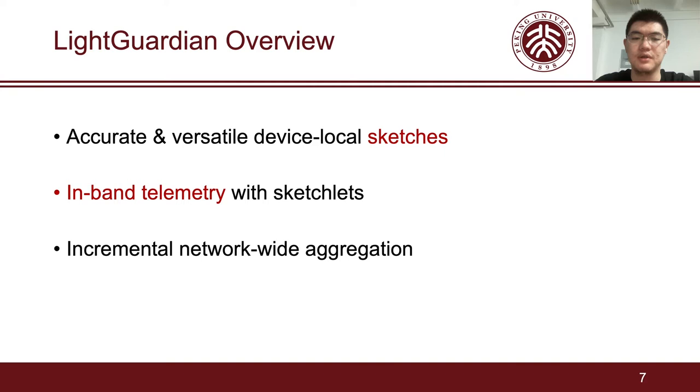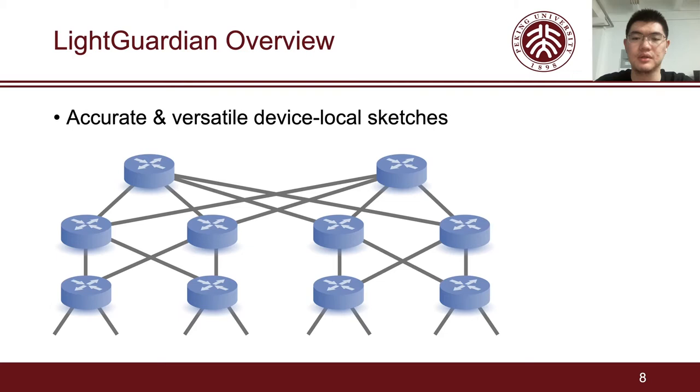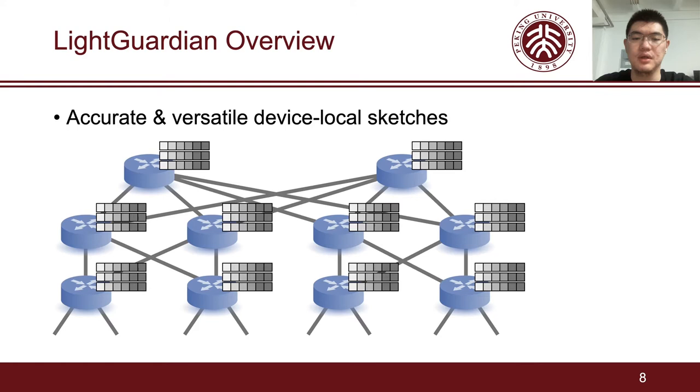To combine the advantages of sketches and embedded telemetry, we propose Light Guardian, which meets the above three criteria simultaneously by using three key technologies. First, we design a new sketch to support common and more important measurement tasks with high accuracy. Having noticed that existing sketches cannot capture some important flow level information, such as per-hop latency and jitter, we design a novel sketch named SumMax. Our versatile SumMax sketch can support almost all flow level measurement tasks. In our system, the SumMax sketches are deployed on each switch to capture flow level statistics.